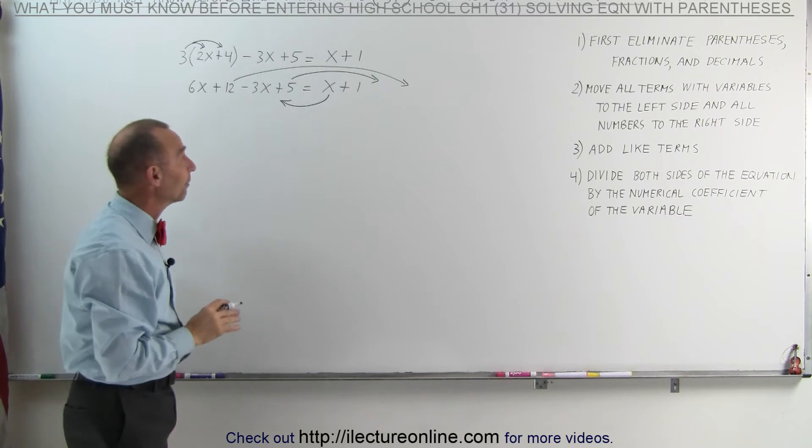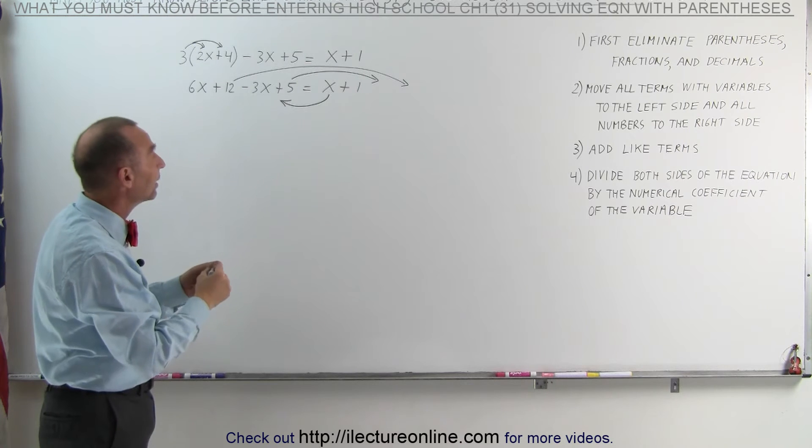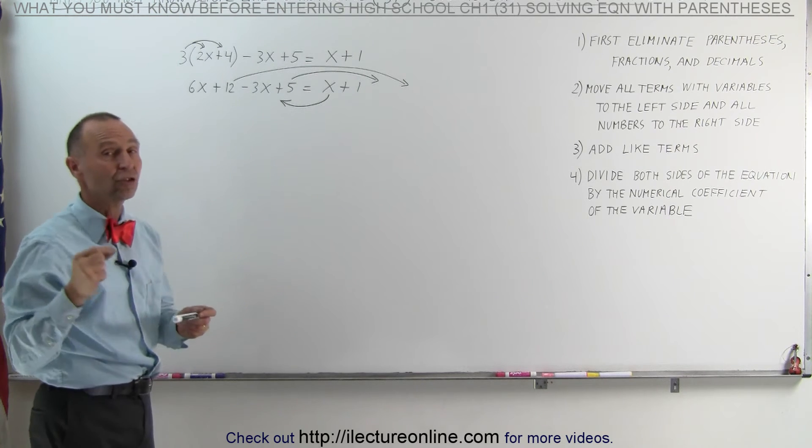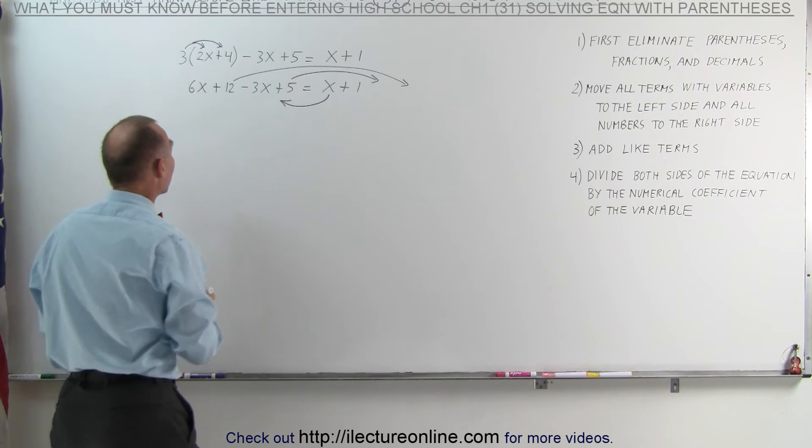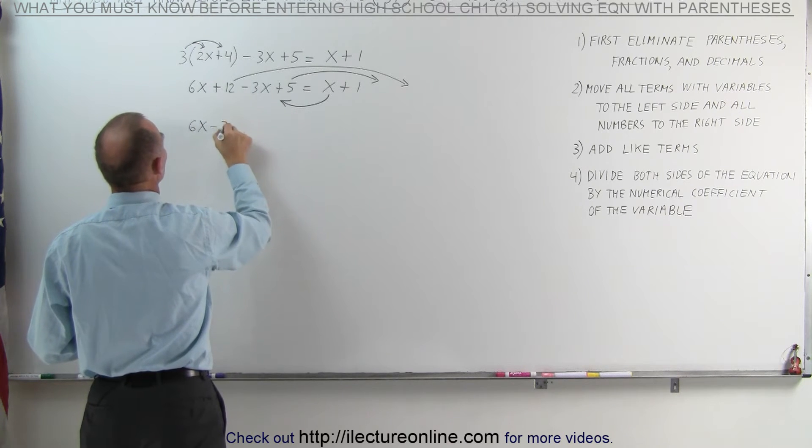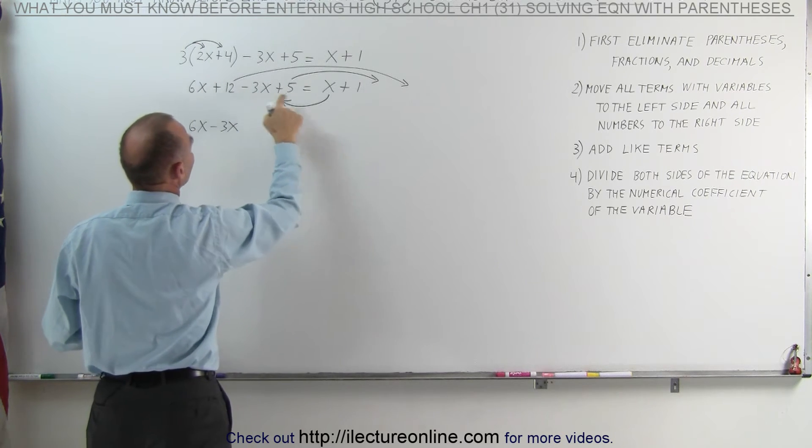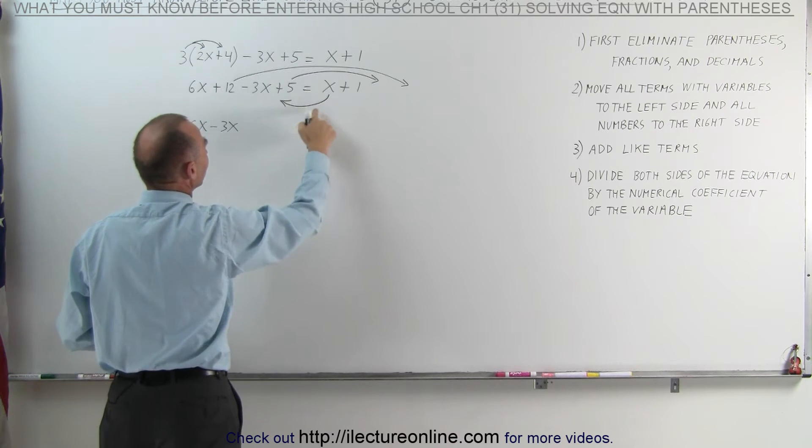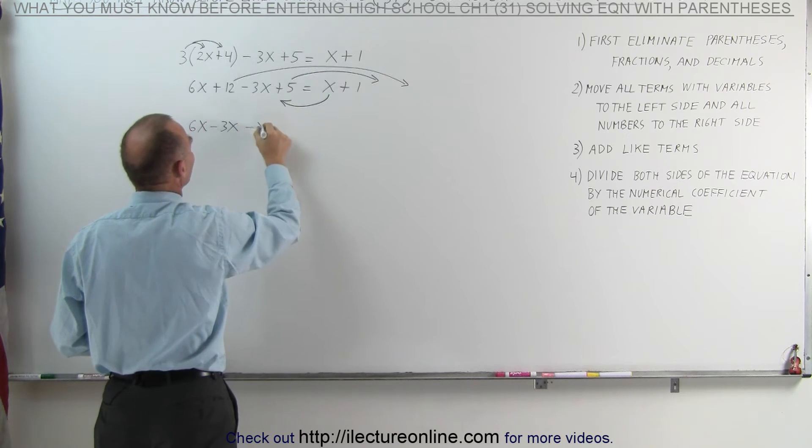Remember from the previous video that whenever we move anything across the equal sign, we have to change the sign. On the left side, we end up with the following. We still have the 6x minus 3x, which were already on the left side. When we move the x to the left side, the positive x becomes a negative x.